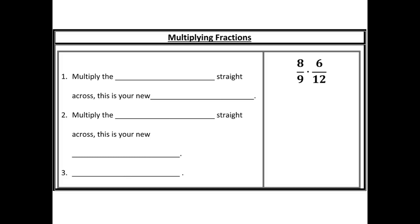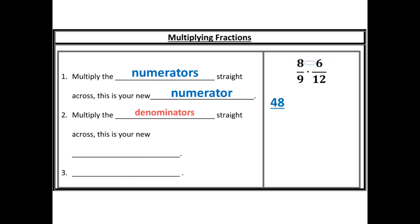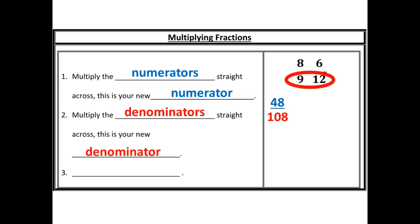In order to multiply fractions, we're going to multiply straight across. We begin by multiplying the numerator straight across — this is our new numerator. So eight times six gives me 48. Then multiply the denominators straight across — this is your new denominator. Nine times 12 gives me 108.